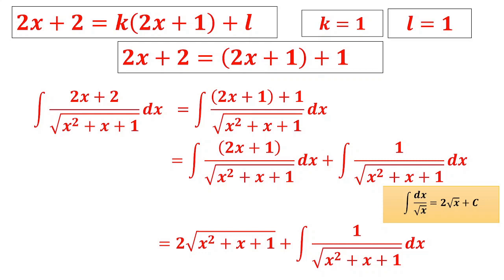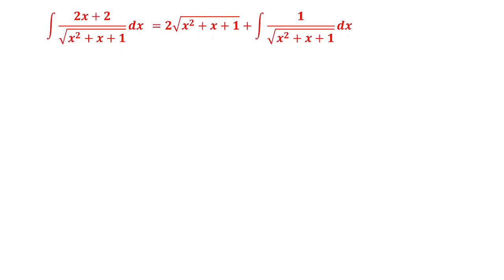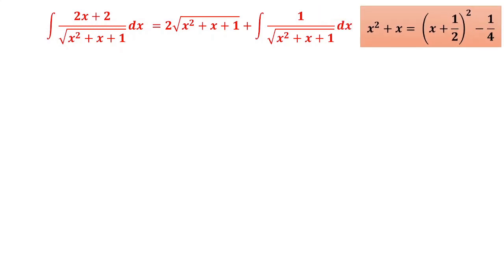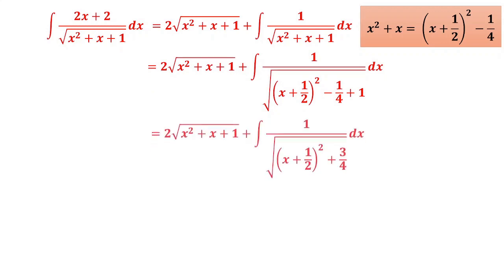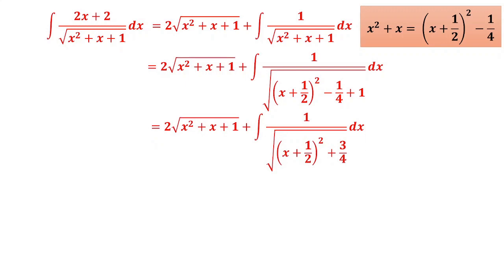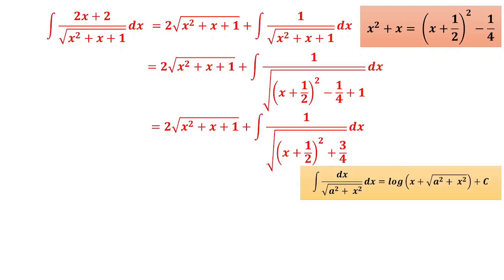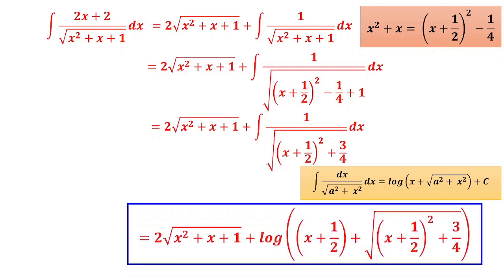For the second integral, complete the square: x² + x = (x + 1/2)² − 1/4, so x² + x + 1 = (x + 1/2)² + 3/4. Using the formula log(x + √(x² + a²)) with x replaced by (x + 1/2): result is log(x + 1/2 + √((x + 1/2)² + 3/4)). Final answer: 2√(x² + x + 1) + log(x + 1/2 + √(x² + x + 1)) + c.